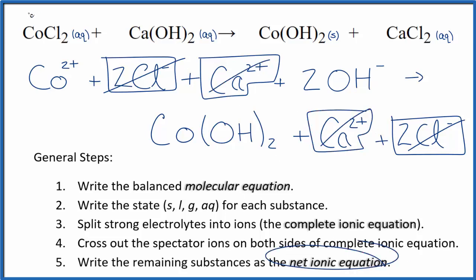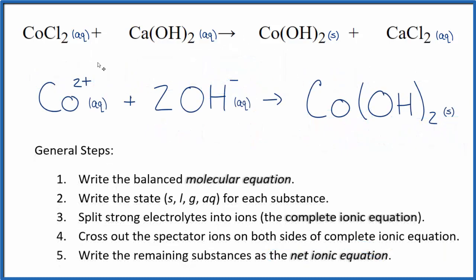What's left, that's the net ionic equation for cobalt 2 chloride plus calcium hydroxide. I'll clean this up and write the states. We'll have our net ionic equation. So this is the balanced net ionic equation for CoCl2 plus Ca(OH)2.